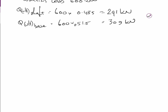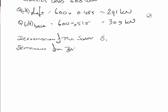Now we need to calculate the total settlement of this pile. There are three components: delta 1 is the deformation of the pile shaft - actual compression of the concrete, an elastic component. Delta 2 is the settlement from base load - settlement of the soil under the load from the base. Delta 3 is settlement from the shaft load. We'll calculate each one and add them up at the end.